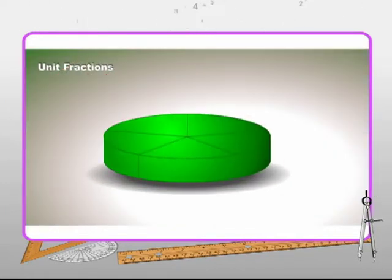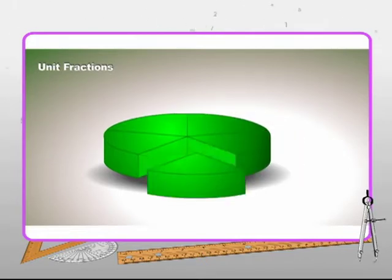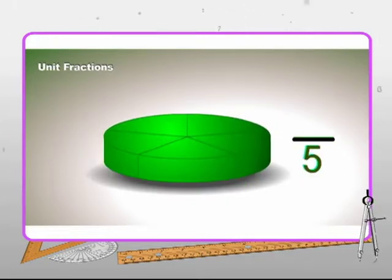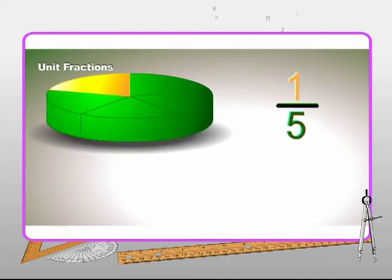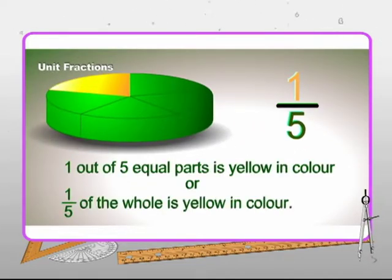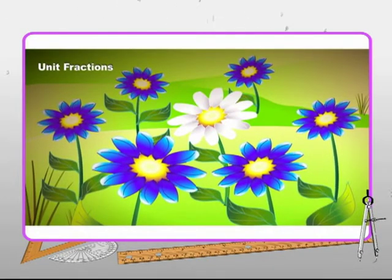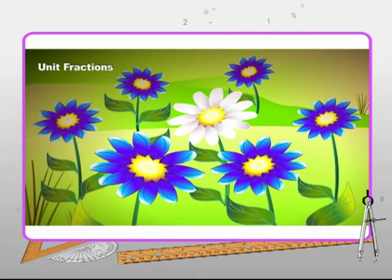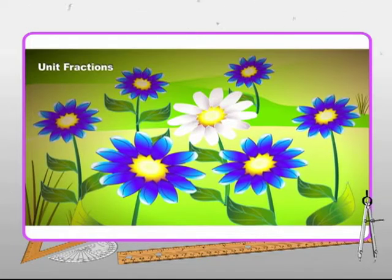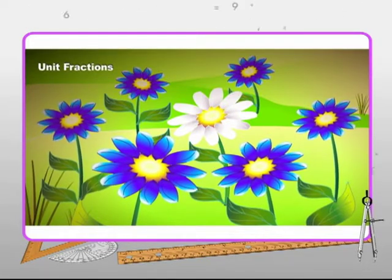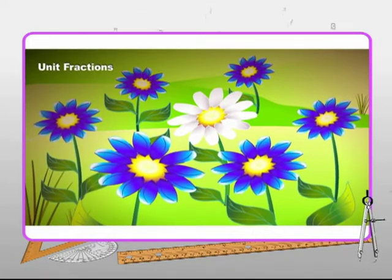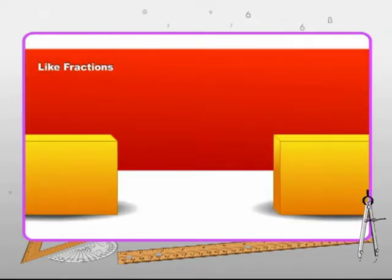Unit fractions are those fractions which have one as the numerator. One by five is a unit fraction in which one out of five equal parts is yellow in color. Can you tell me about the fraction of the flowers that are white in color? One by seven of the flowers are white in color.